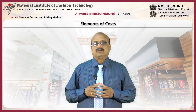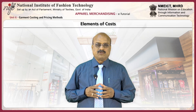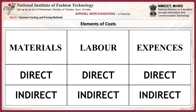There are three main elements of costs: materials, labour, and other expenses. Materials are generally direct expenses. Labour can be direct or indirect. Other expenses can be direct or indirect.